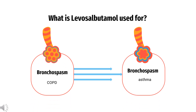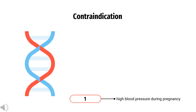What is Levosalbutamol used for? It is indicated for the management of COPD, chronic obstructive pulmonary disease, also known as chronic obstructive lung disease, and asthma.